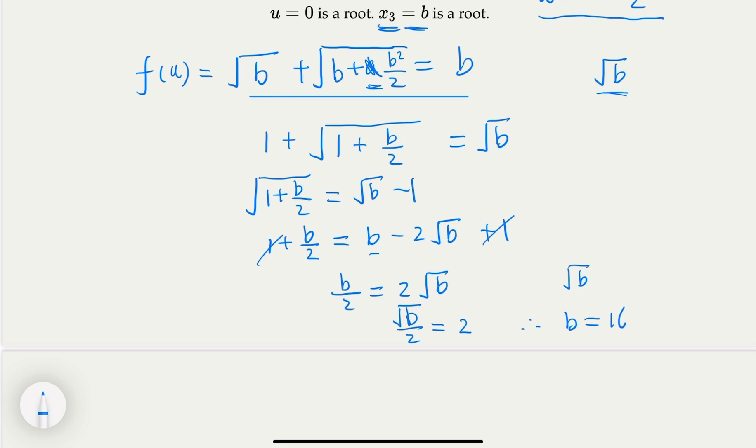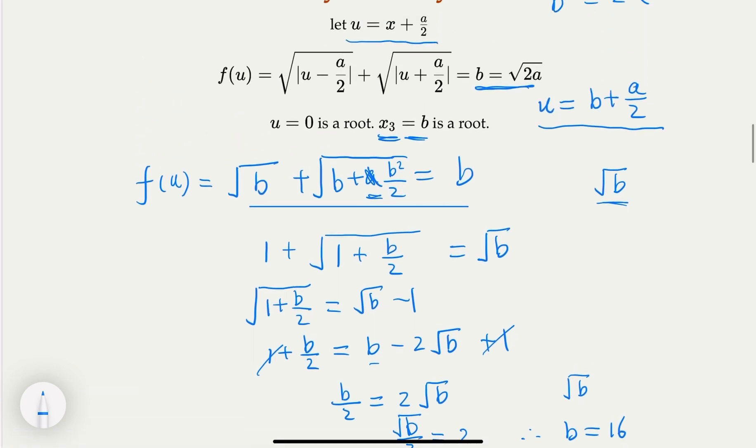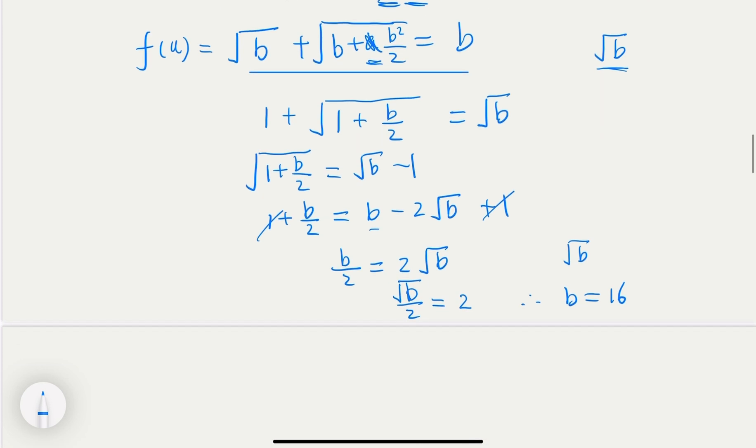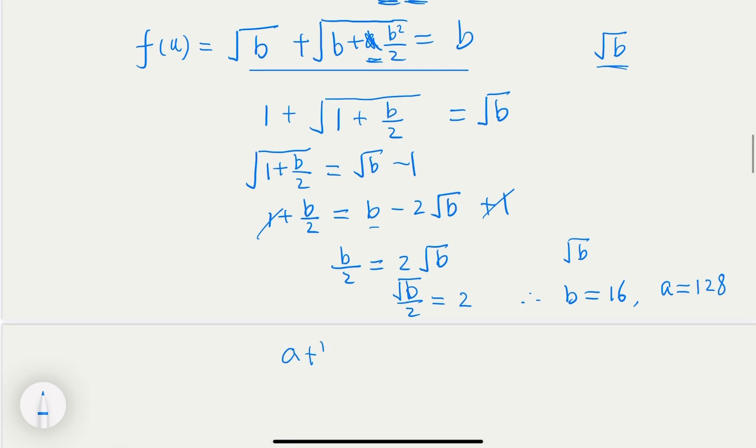Right? So what is a? A here is half of b², right? So b² is 256, half of that would be 128. So what is a plus b? a plus b, we got 144. That would be the answer to the problem.